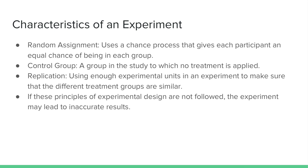Besides treatment groups, it's also important to have a control group, which is simply a group of experimental units from which data is collected that has no treatment applied. The main purpose of collecting data from a control group is to prevent confounding and to reduce the variability of the response variable, or what is being measured.